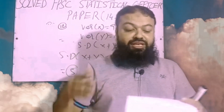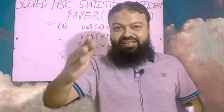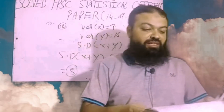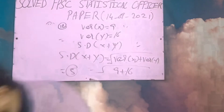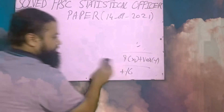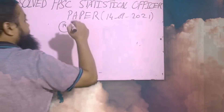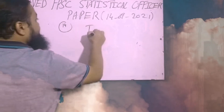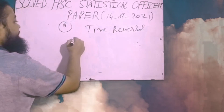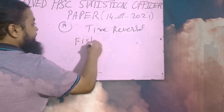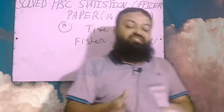Question number thirteen: Fisher's ideal index number is called ideal because it satisfies both the time reversal test and the factor reversal test. Question number fourteen: which index number satisfies the time reversal test? It is satisfied by Fisher's index as well as Marshall's index — so both will be the correct option in the exam.